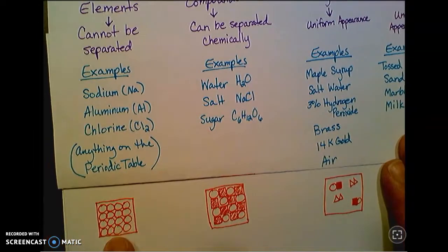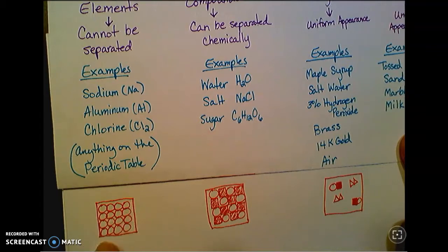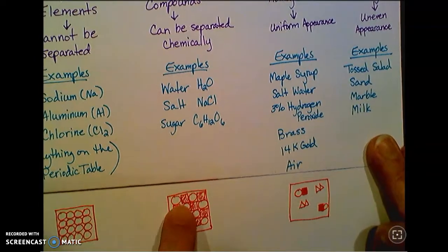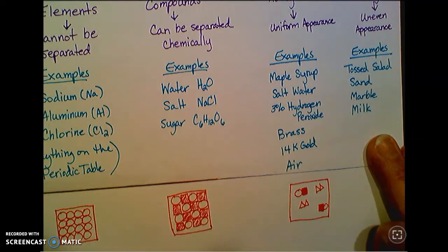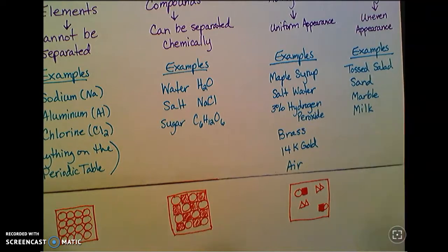I had to put my particle diagrams on a different sheet because I messed them up. An element, if I look at the particle level of elements, every atom looks the same. This happens to be a solid, so all of those atoms are the same. If it's a compound, then I've got different types of atoms, but they're arranged or mixed together in a regular pattern. So whatever this is, I've got a circle square compound, and you notice that it's very regular and very arranged.